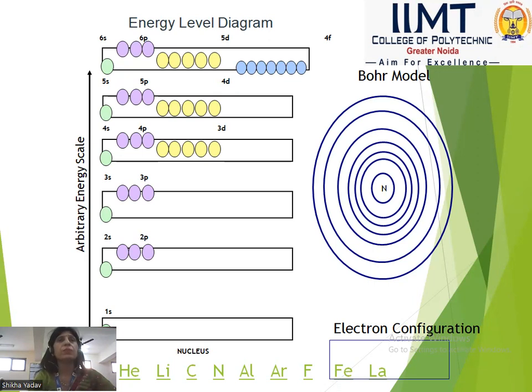The first point of the Bohr-Bury rule is that the maximum number of electrons in a shell is given by 2n². If n=1, we get 2 electrons. If n=2, we get 8 electrons, and so on for n=1, 2, 3, 4.